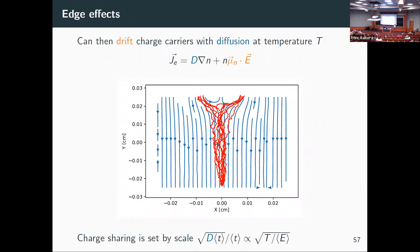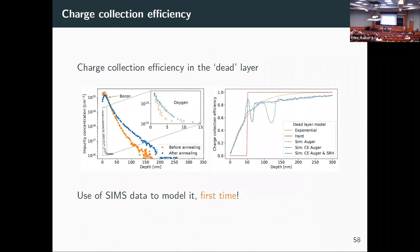We've done COMSOL simulations and various other approaches. We even got the manufacturer to tell us what the dead layer looks like — which I was honestly surprised about, since they're usually cagey about detector specifications. We got SIMS (secondary ion mass spectroscopy) data — basically ablating the surface and doing mass separation to see what ions are there. Our boron profile is effectively the p-type window. We had data before and after annealing: before annealing it's sharper; after, things start diffusing. We can use this data to construct an actual charge collection efficiency model.